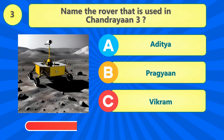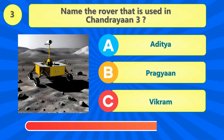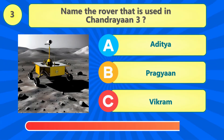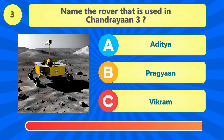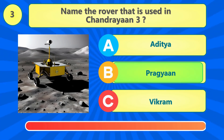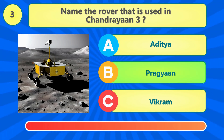What is the name of the rover used in Chandrayaan 3? That's right, it's Pragyan.